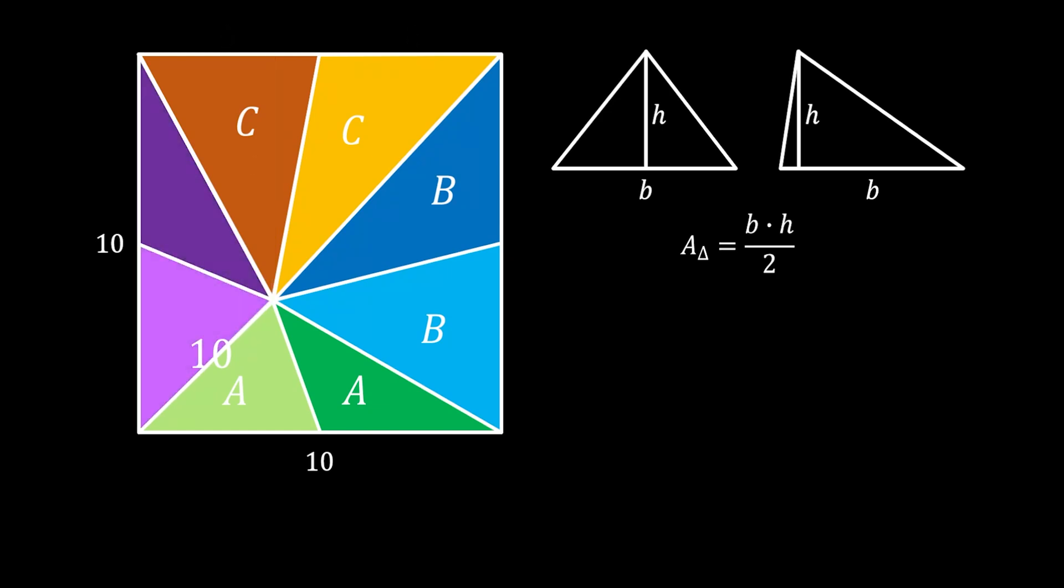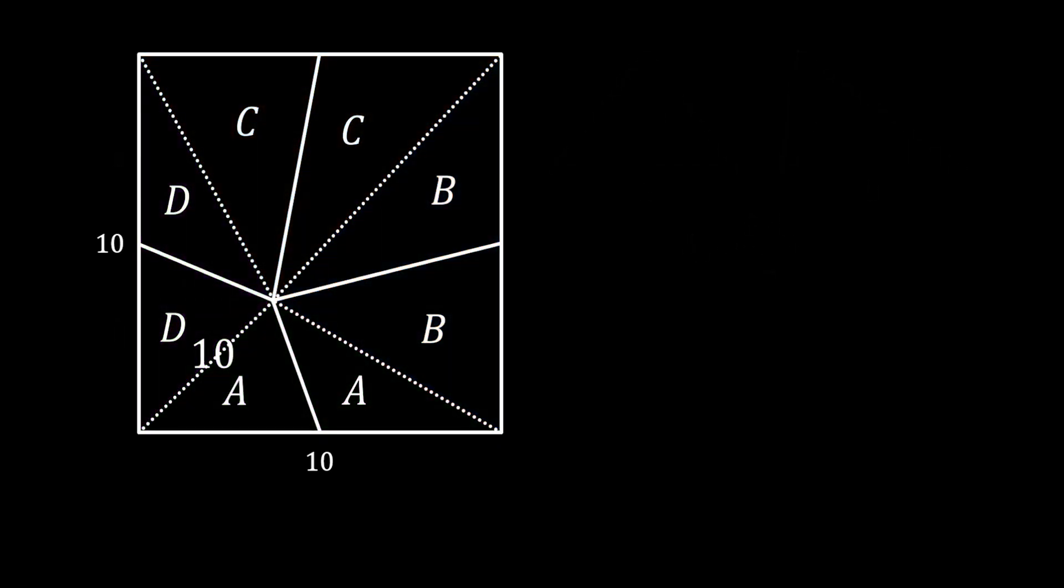And if we pull their height horizontally to the left, you can see that they have the same height. So those two triangles have the same area, and I will label their area as D. Alright, so now we have too much colors on the screen, so let's simplify our image a little bit.